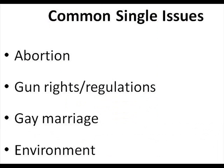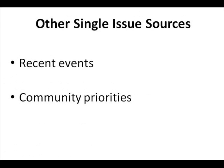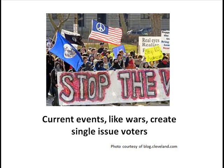Common single issue voter interests include abortion, gun rights, gay marriage, and environmental issues. Other single issues can be due to recent events or community priorities. For example, there may be a large number of people voting only because they believe a war effort should be ended or increased. Or a community may also be passionately for or against allowing casinos to open in their city.